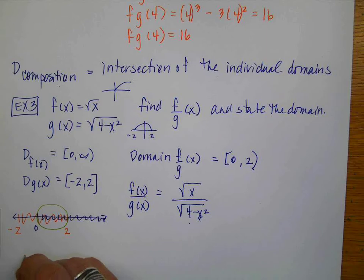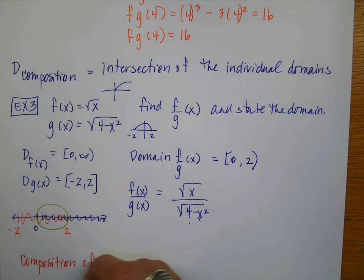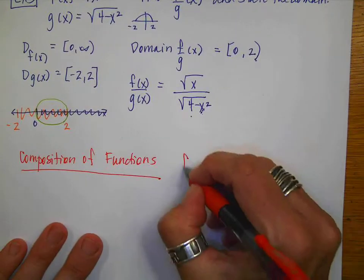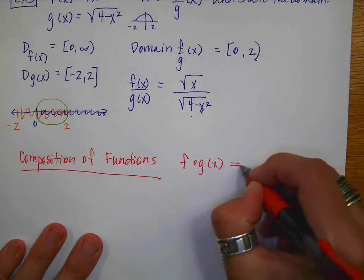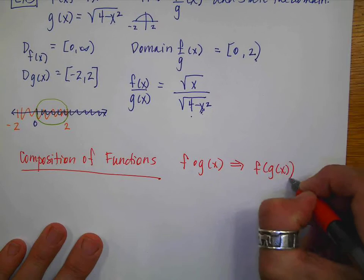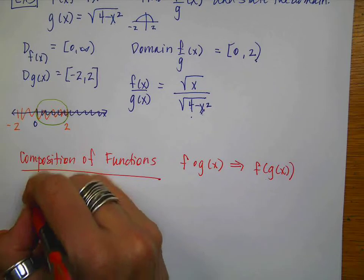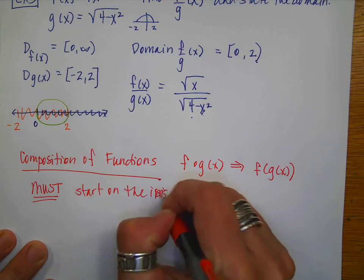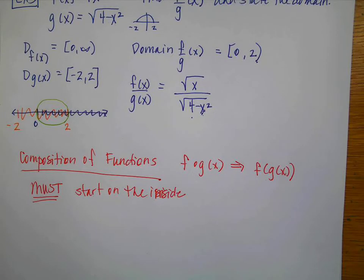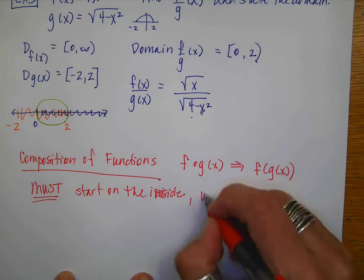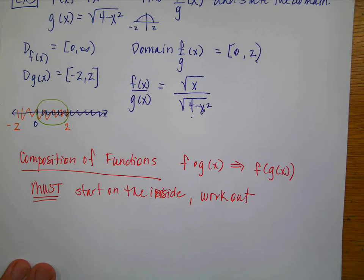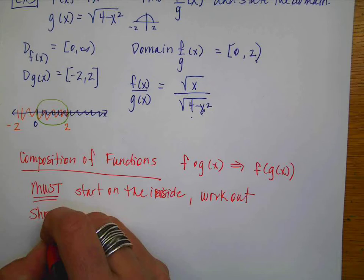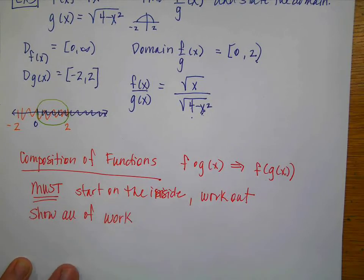Our next topic is the composition of functions, which is a review from previous math courses. The notation is either f(g(x)) or written with the small circle as f∘g of x. When managing a composition, you must start on the inside and work out. I'd also highly recommend showing all your work — when you start skipping steps, that's when mistakes happen.